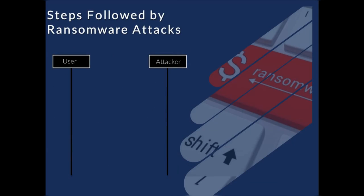There are four steps followed by ransomware attacks. In the first step, the attacker sends the malware to the user, imitating a trustworthy source. Usually these are links sent to the user, and if the user knowingly or unknowingly clicks on these links, the malware gets installed on their computer.